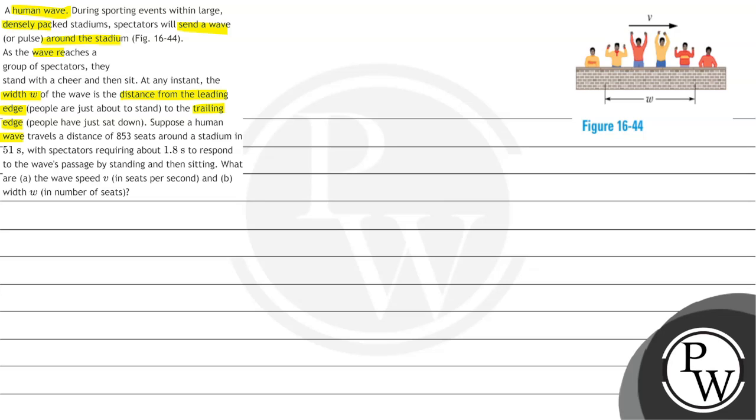Suppose a human wave travels a distance of 853 seats around a stadium in 51 seconds with spectators requiring about 1.8 seconds to respond to the wave's passage by standing and then sitting. What are part A the wave speed V in seats per second and part B the width W in number of seats.